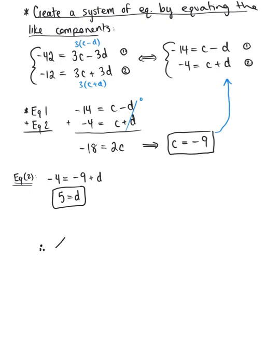So we can say that this vector minus 42 minus 12, which we initially defined as c times vector u plus d times vector v, that's the linear combination of vector u and vector v. And plugging our two scalars in, we have a final answer of negative 9 times vector u plus 5 times vector v.